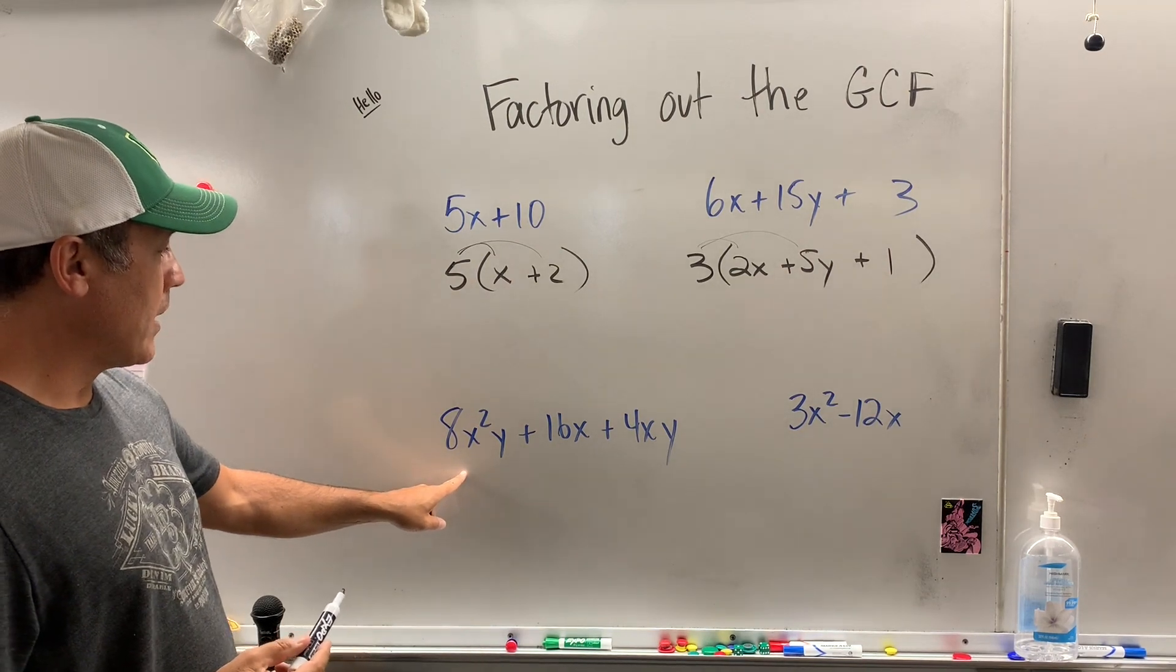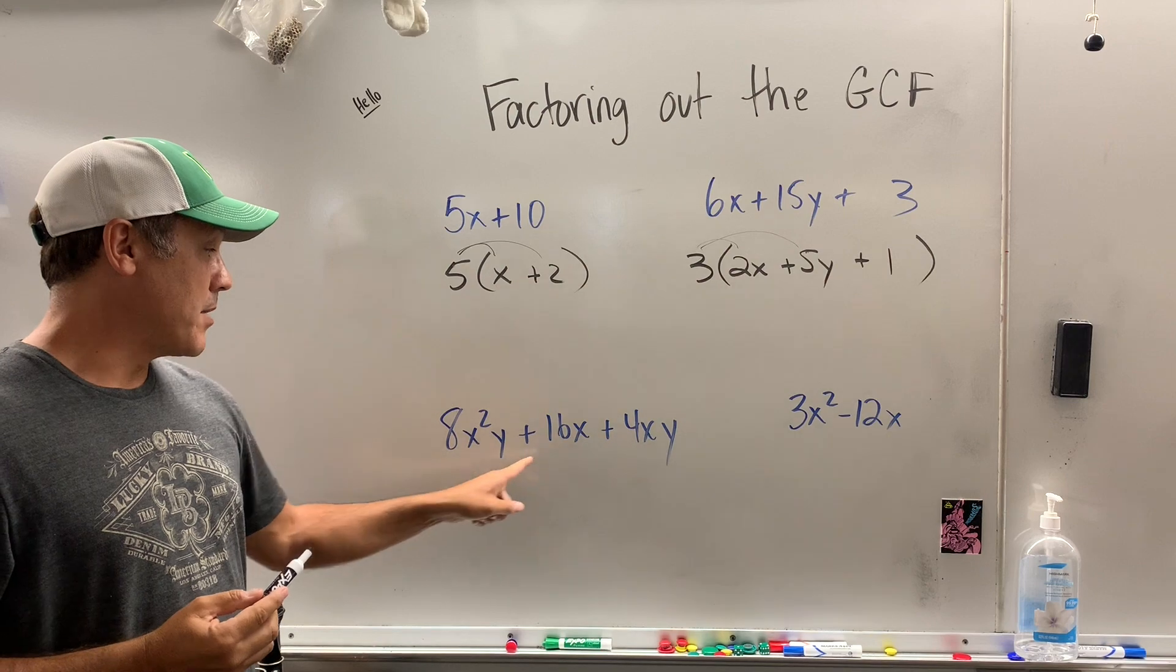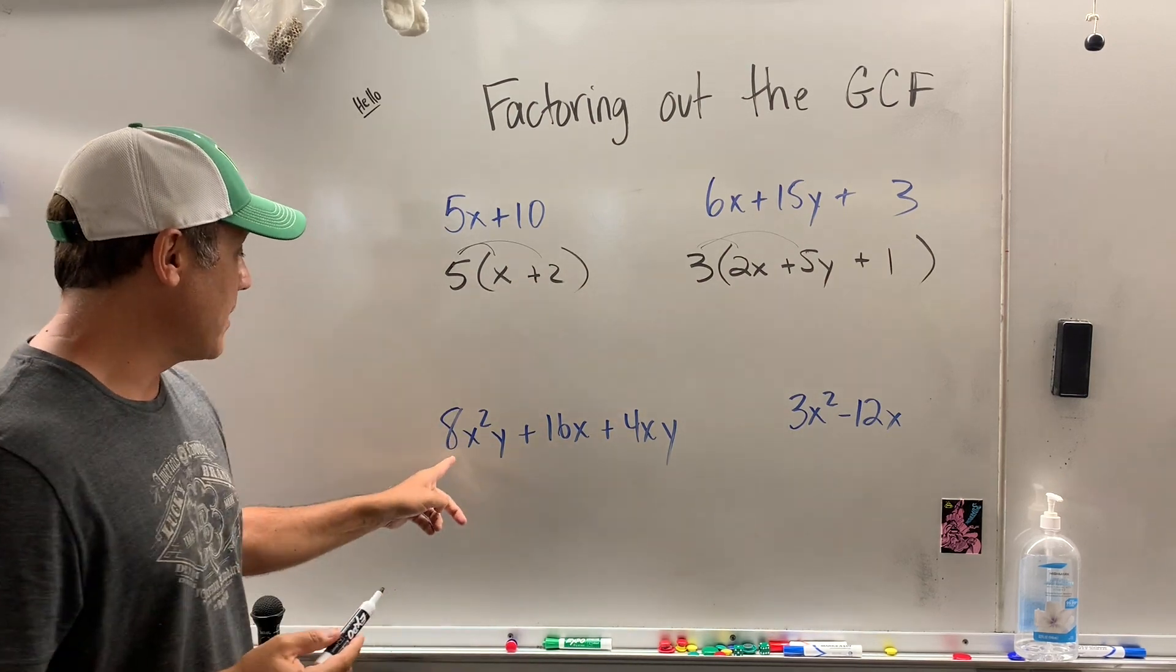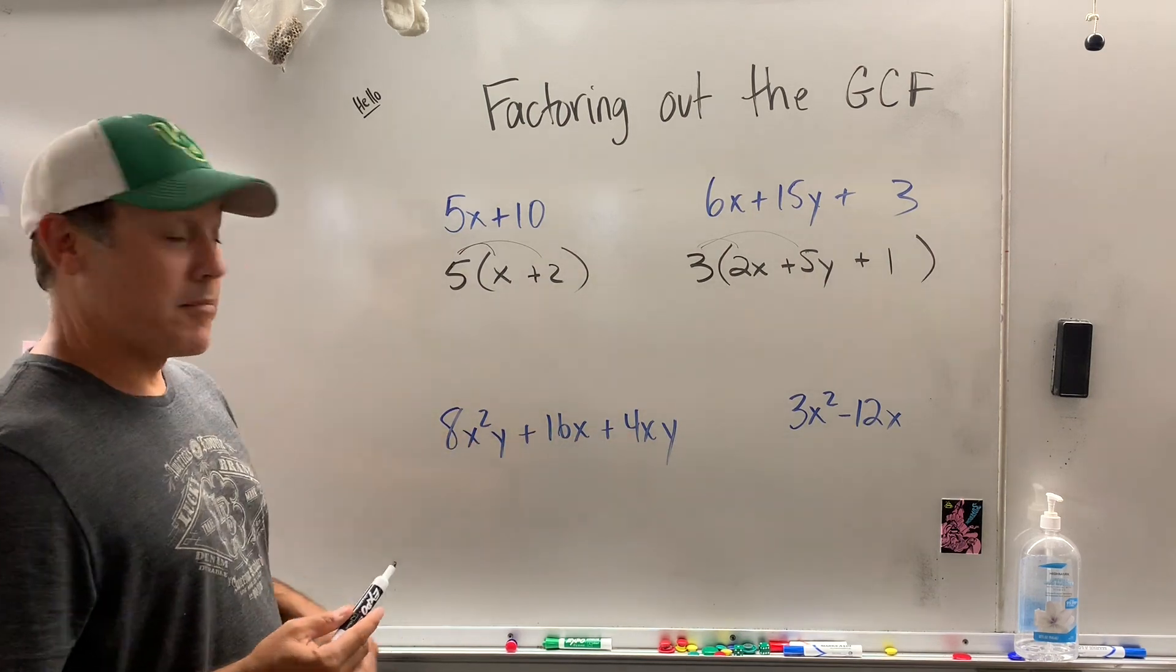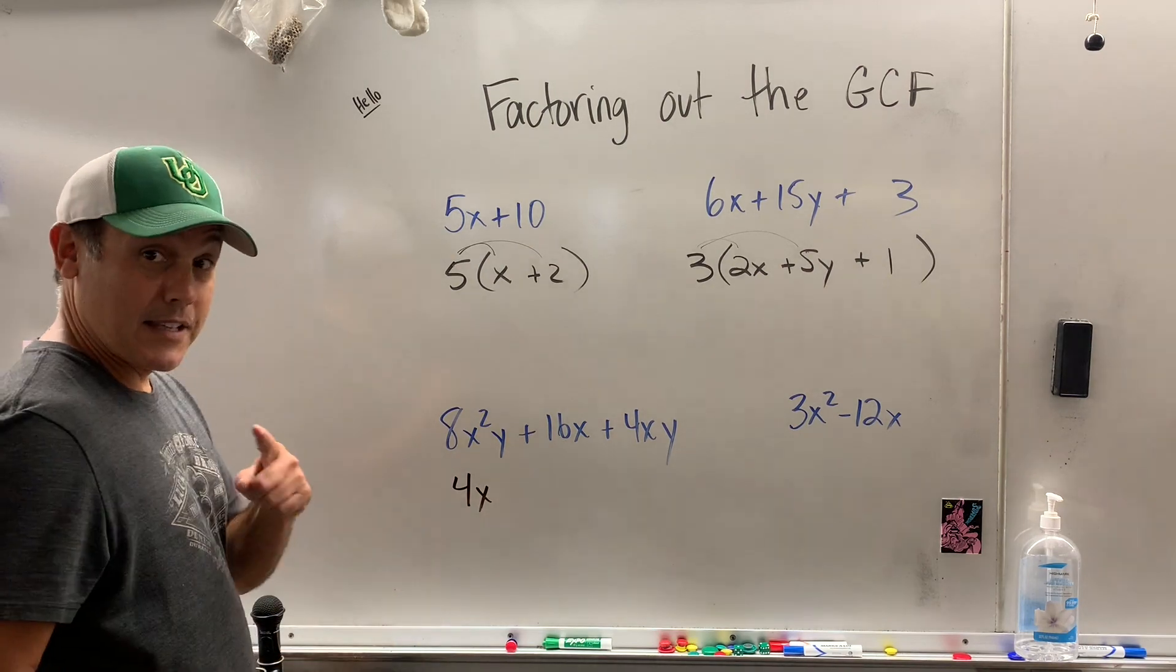Down here, okay, I notice each term has an x in it, but each term does not have a y, so I can't pull out the y, but I can pull out the x. And then how about the numbers? 4 is the biggest number that goes into all those. So I take out 4, but I could also take out the x.